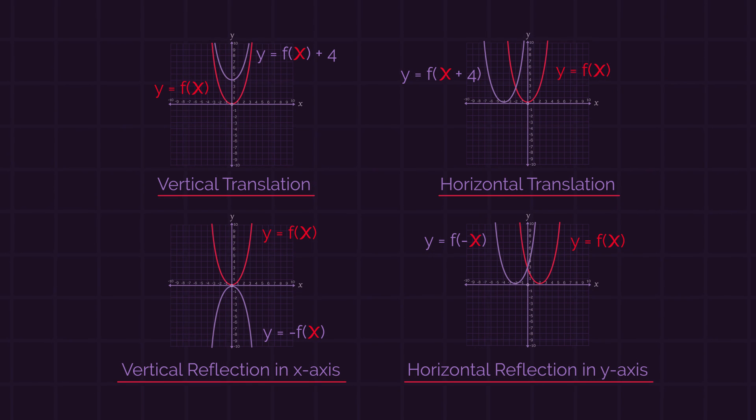Before we start, remember that for vertical transformations we apply the transformation to the whole function, so the outside, whereas for horizontal transformations we apply the transformation just to the x's.